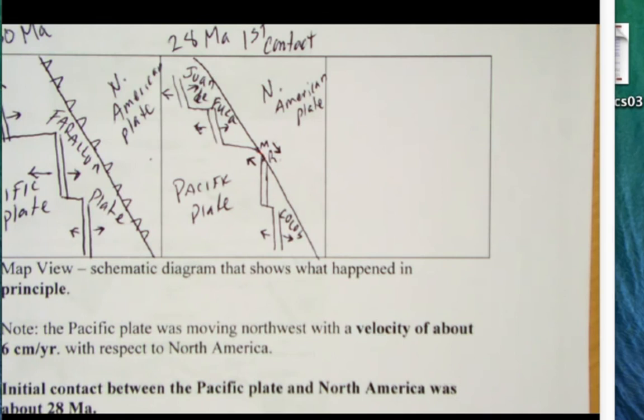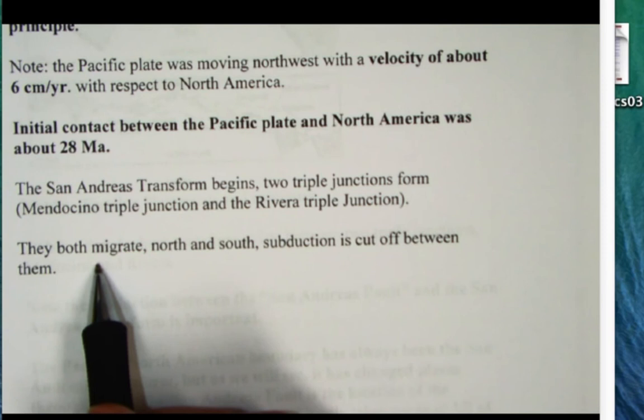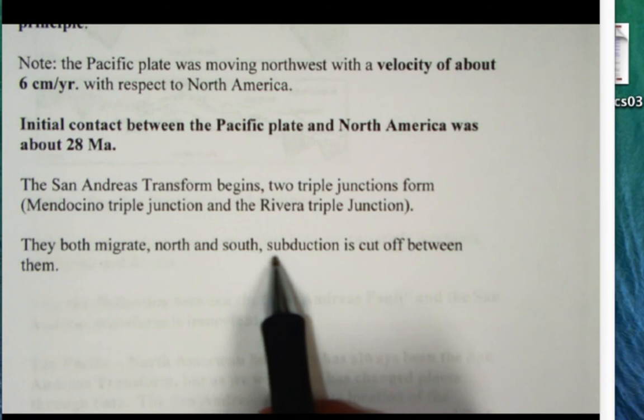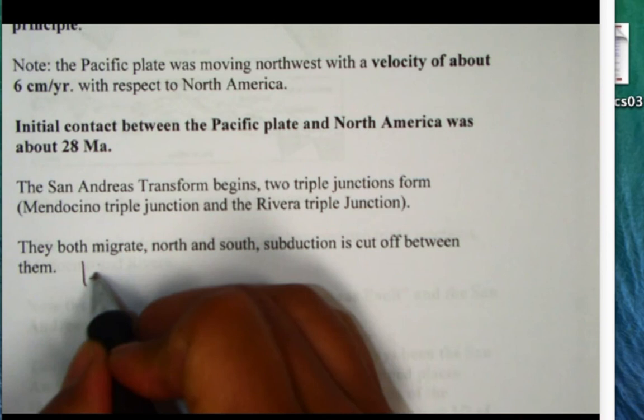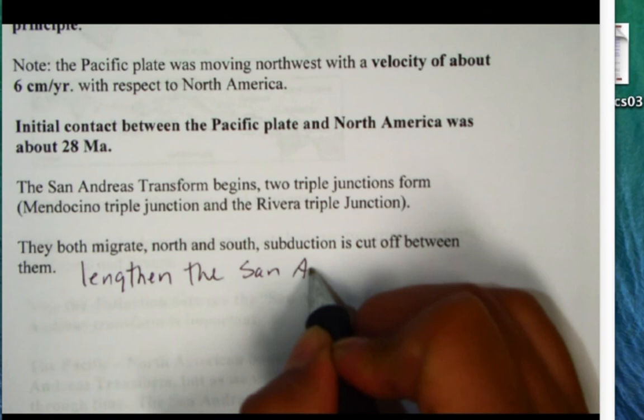For this one up here it's Pacific, Juan de Fuca, North American. The other thing that's important is over time these triple junctions migrate. They migrate north or south away from each other and as they migrate north subduction is cut off and you lengthen the San Andreas transform, in other words you make it longer.